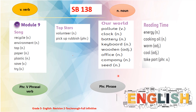When we have 'PHR', it means it is a phrase. For example: 'pick up rubbish'. And finally, 'ADJ' means it is an adjective. For example: warm, wooden, food, excellent.